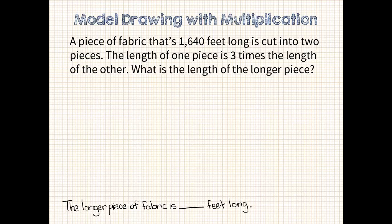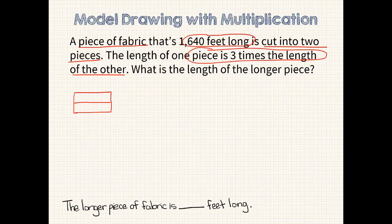What information is important to solving this problem? A piece of fabric that's 1,640 feet long is cut into 2 pieces, and one piece is 3 times the length of the other. Again, I will start out with 2 equal sized pieces of ribbon and adjust them. Since one piece is 3 times the length of the other, I'll add 2 more equal sized pieces to my first ribbon.